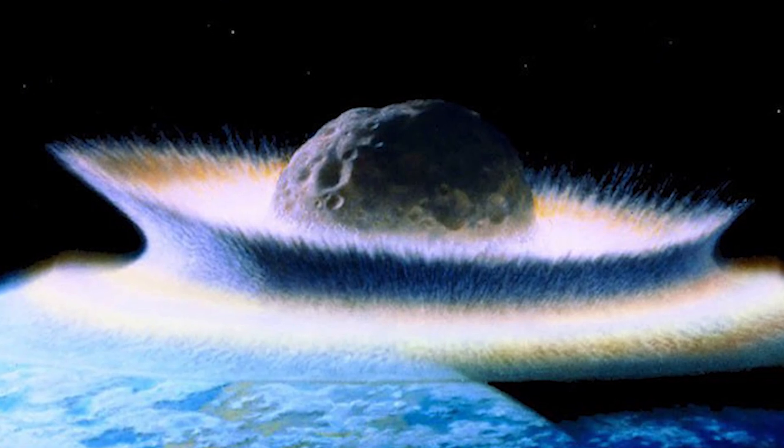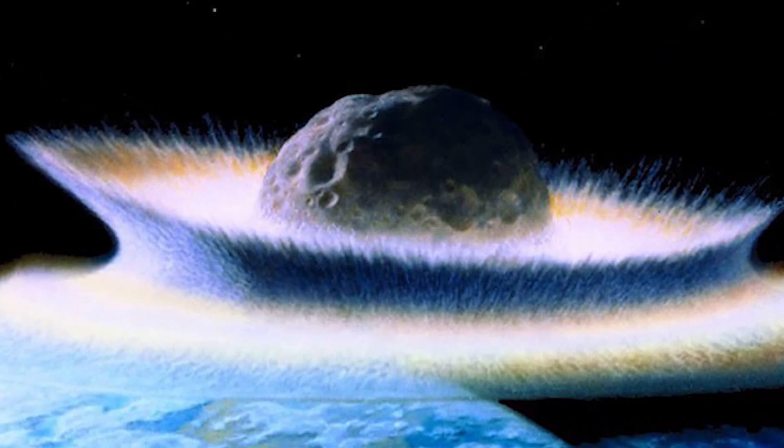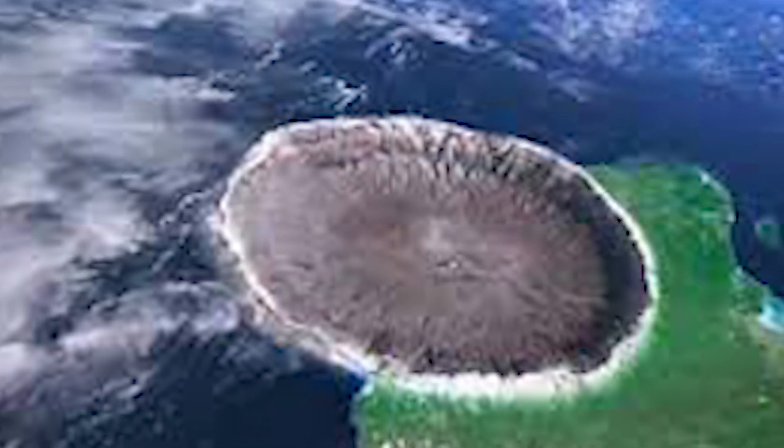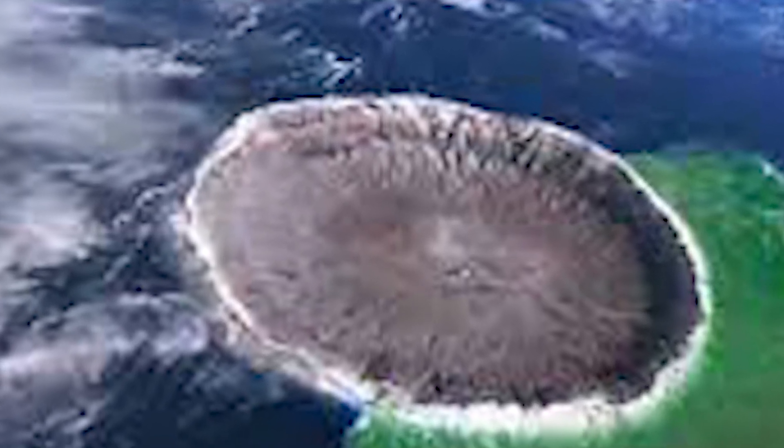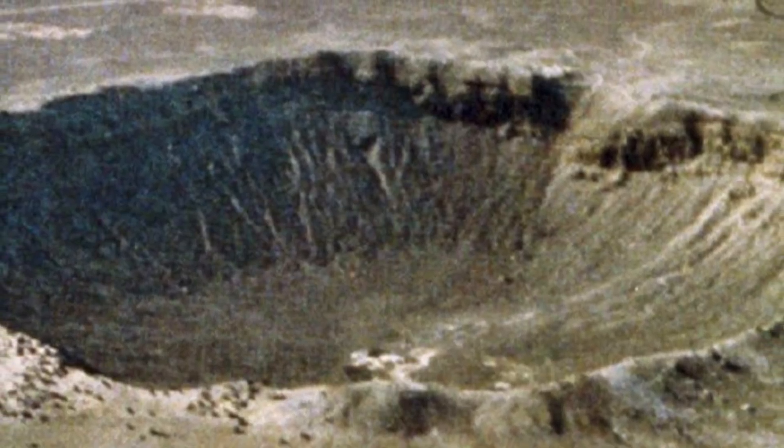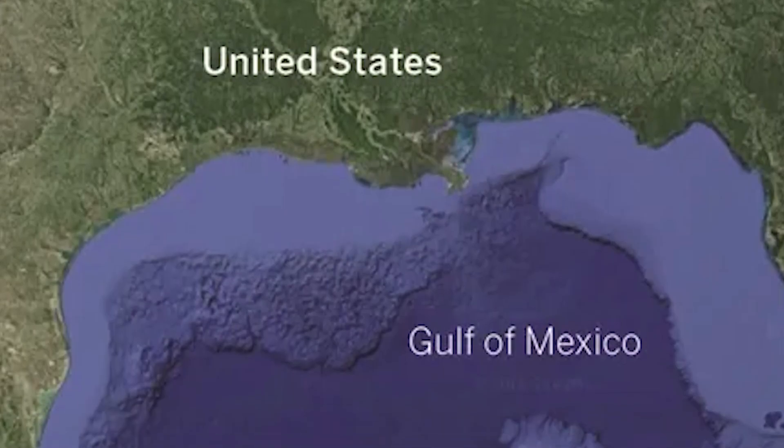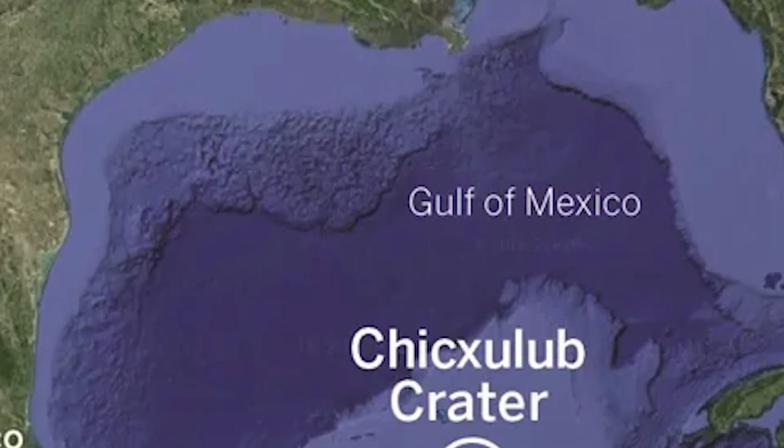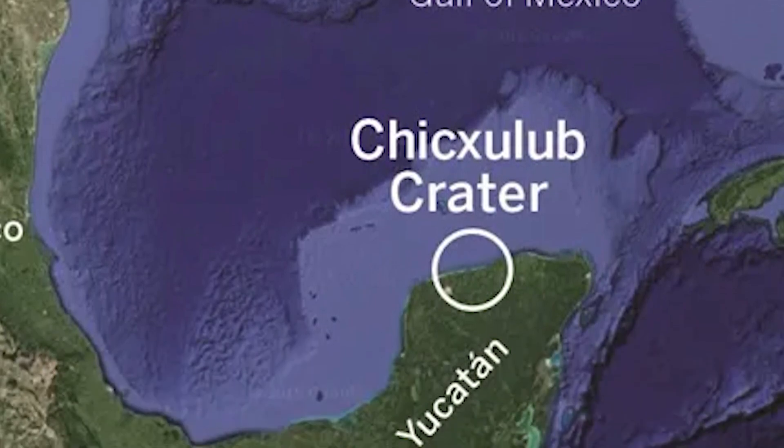It crashes into what's now the Yucatan Peninsula in Mexico, and boom! It unleashes energy like billions of atomic bombs, creating a crater 150 kilometers wide and 20 kilometers deep. The aftermath? A global climate shake-up, and about 75% of Earth's species, including the dinosaurs, say their final goodbyes.